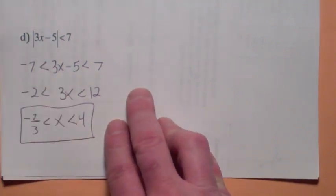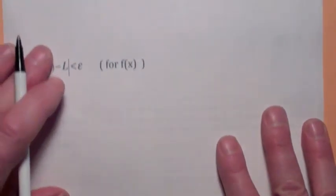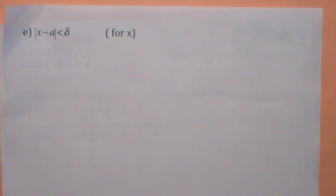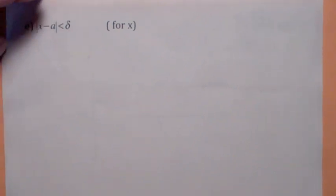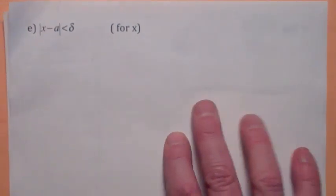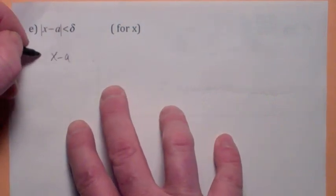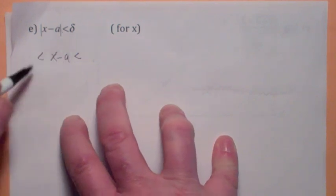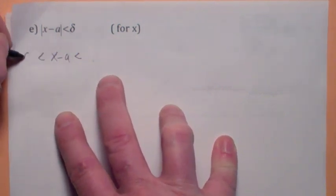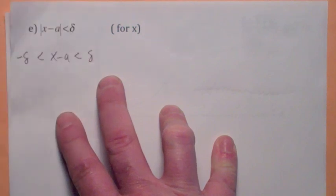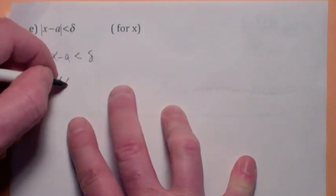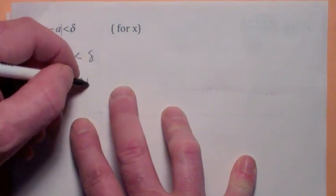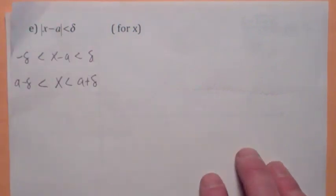A couple more, and then we'll get to the precise definition of the limit. All right, so if you encounter something like this, we're solving for x. How would you solve this absolute value inequality? What's inside the absolute value bars must be between, oh, by the way, delta is what this is. Think of it as an unknown number. It'll be greater than negative delta, and it's less than delta. So how would you solve for x? x is between a minus delta and a plus delta. I just added a to all three things.